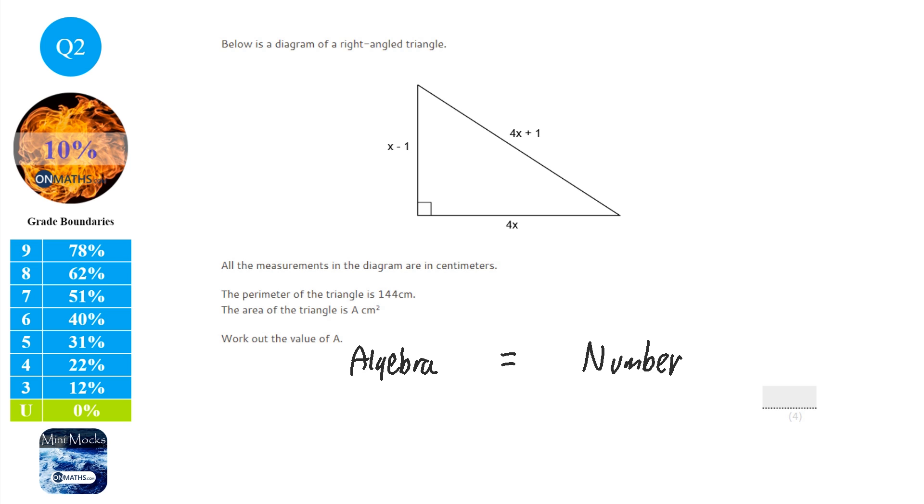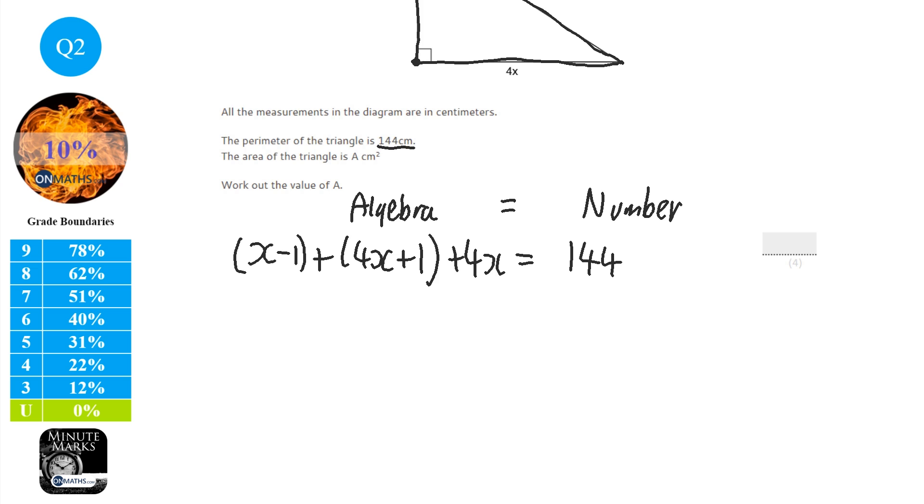So the perimeter is the distance around the shape. So if you pick a point, I'm going to pick here, and just walk around the shape. And so it's going to be x minus 1 there. And keep walking. I'm going to add it on to 4x plus 1. And keep walking. I'm going to add 4x. And the perimeter is just all the sides added. Now, as a number, it says that it is 144. And there we go. We've got ourselves an equation to be able to solve and find out what x is.